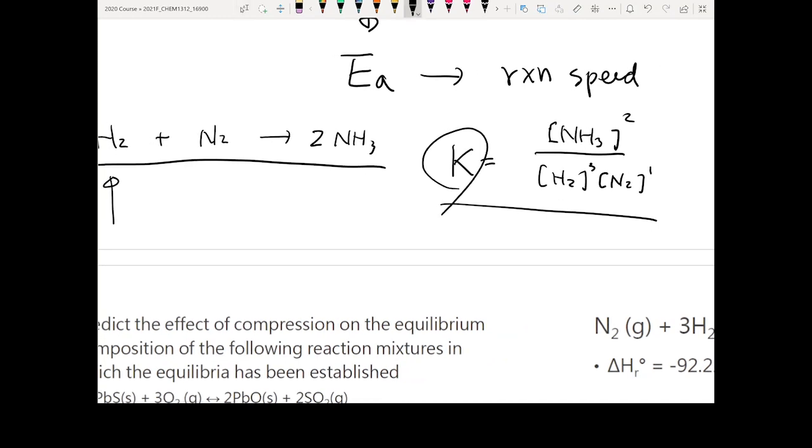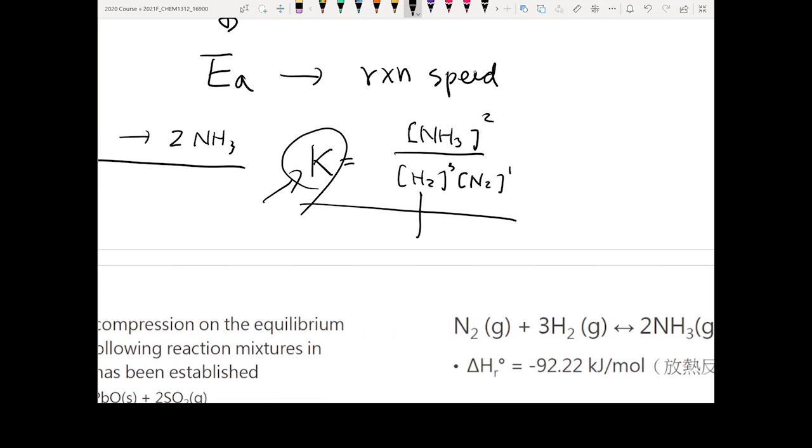You can actually use these things to think. K is what? The equilibrium constant. What is the keyword? A constant. So this is a fixed value. So if today you increase this, in order to keep the same value, you need to produce more of this, right? Then the reaction is going to move toward the product side. Make sense now?